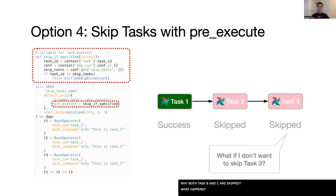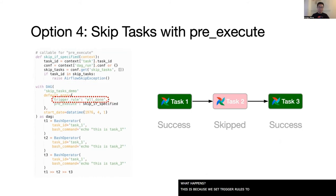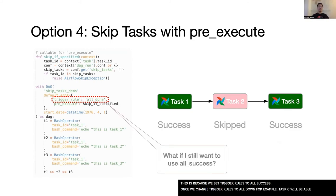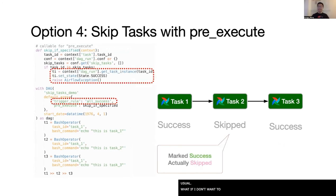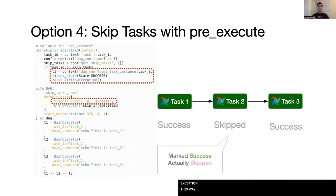This is because we set the trigger rules to all success. Once we change the trigger rule to all done, for example, task C will be able to run as usual. But what if you don't want to change trigger rules? In that case, you can modify the pre-execute function to set the task status and then throw an Airflow exception. This way, you can achieve the same goal, except task B will look succeeded, but we all know it's been skipped.